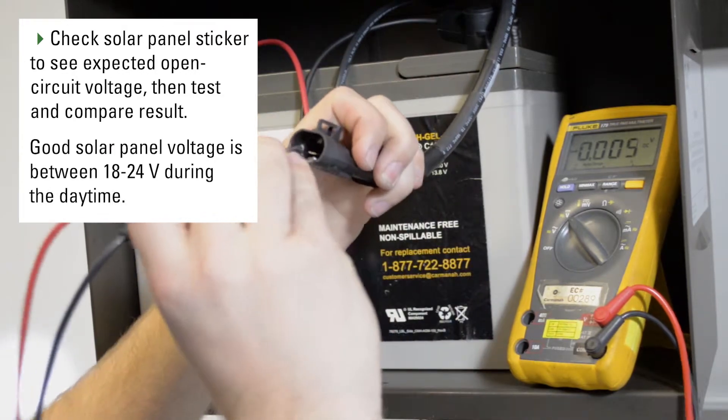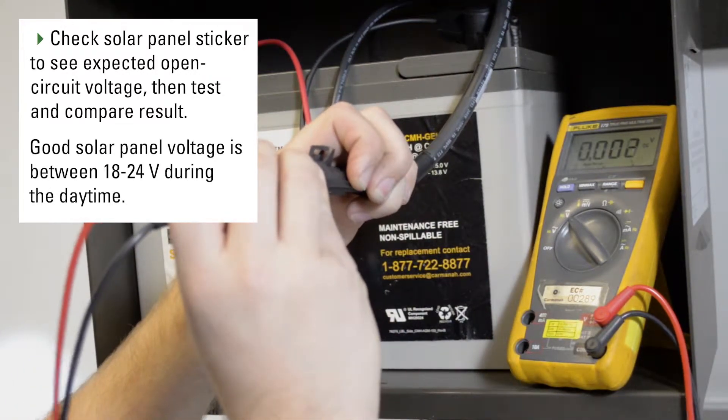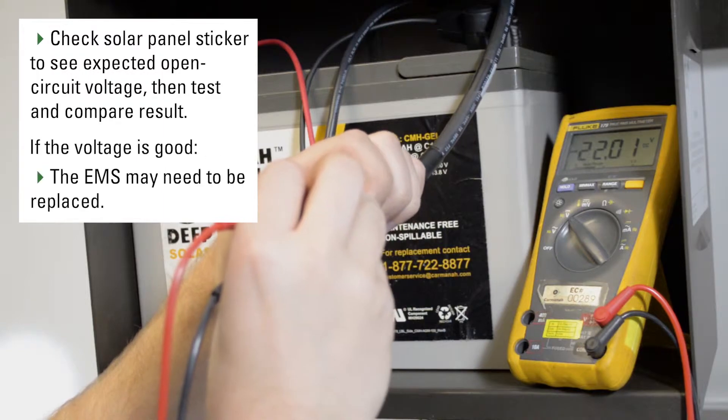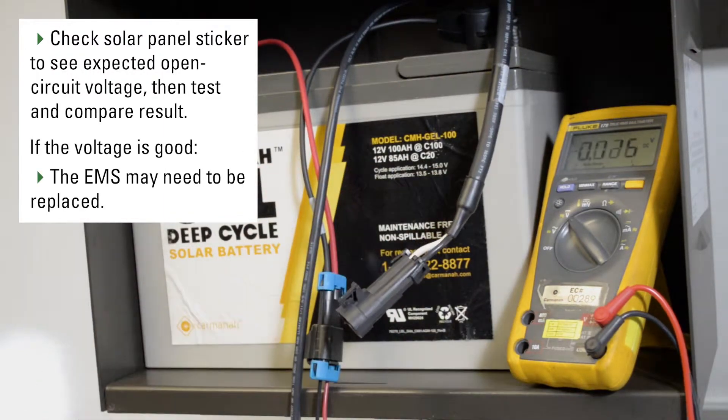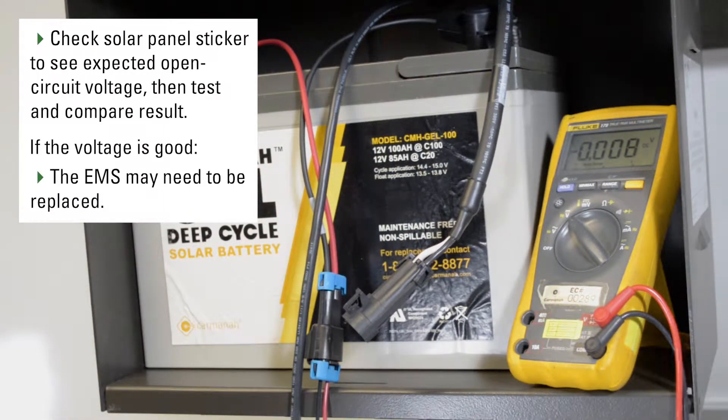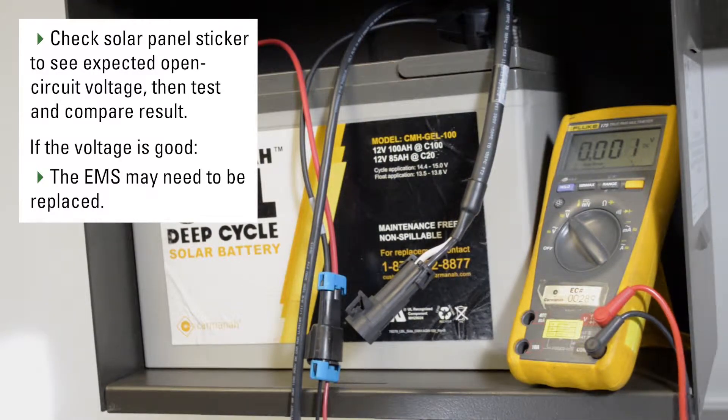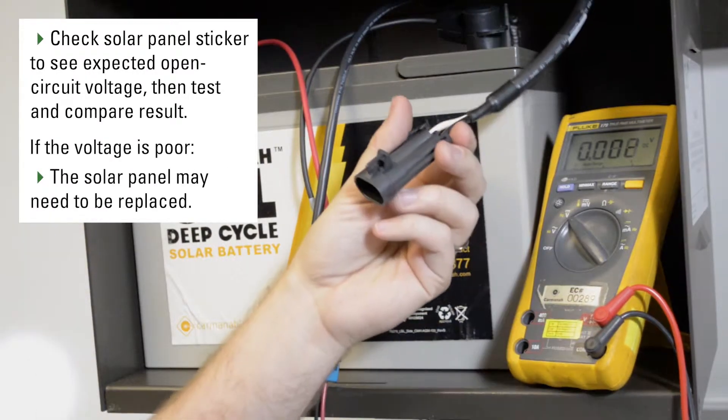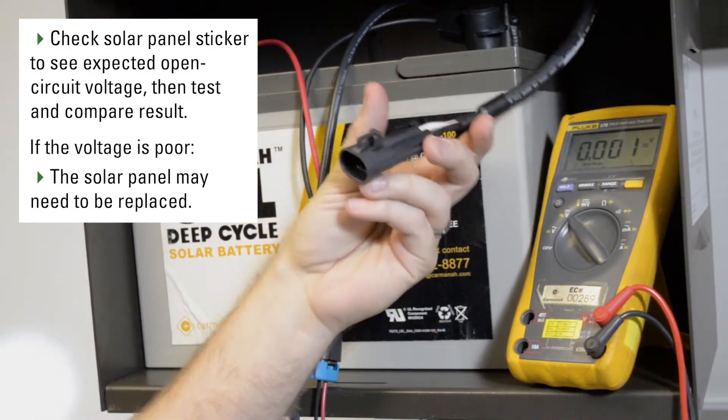When you test the open circuit voltage, you should expect to get a very similar number to that value. If you have a good open circuit voltage coming from the panel, it is possible that the EMS needs to be replaced as it is not functioning properly. If you don't get a good voltage coming from the panel, it may need to be replaced.